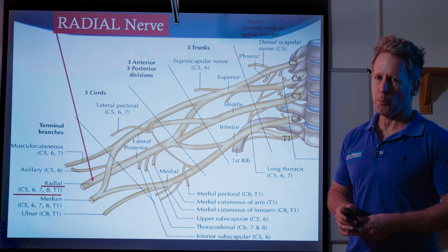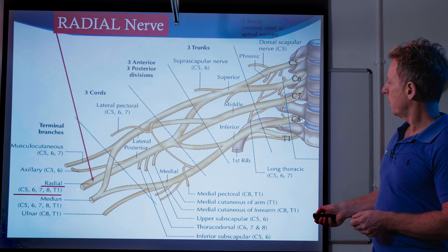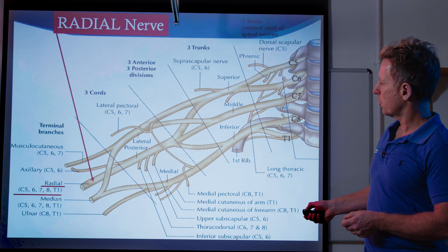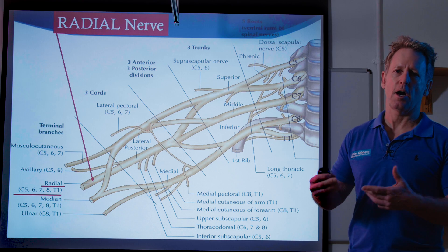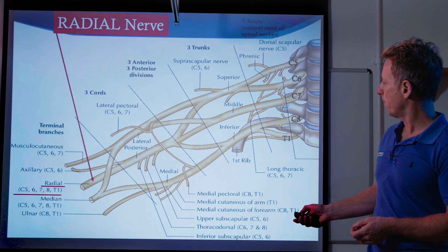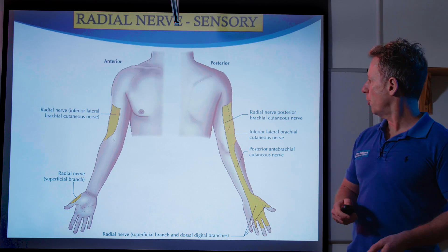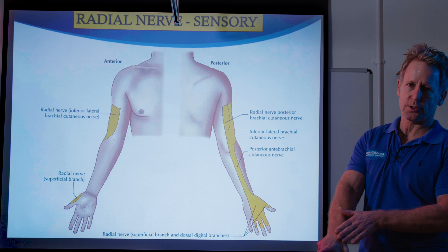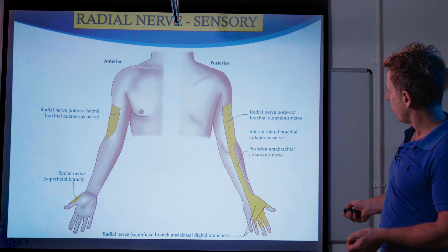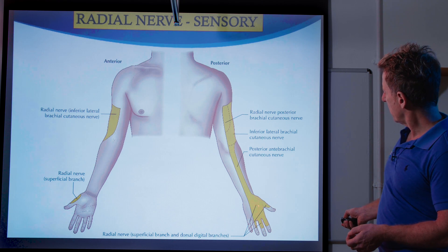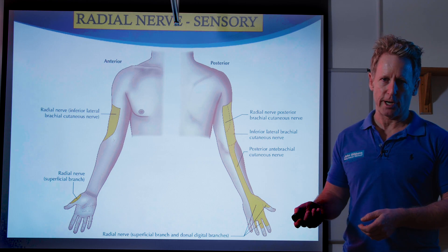That's the A — axillary. Now let's look at the R, which is the radial nerve — a bit more complex. The radial nerve comes from C5, C6, C7, C8, and T1, so it's a big nerve. Looking at the sensory innervation, it's mainly the web space on the dorsal surface — that's the main area of innervation for the radial nerve, though there are other areas.